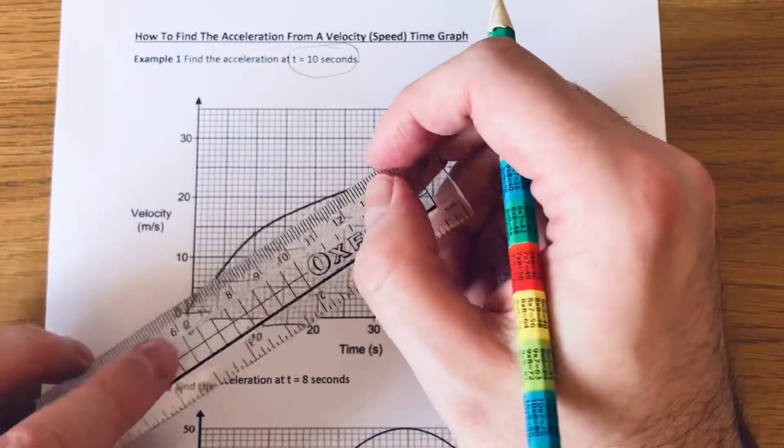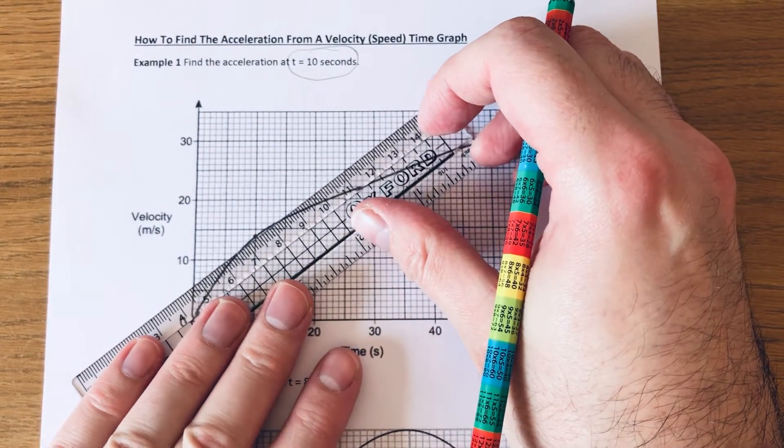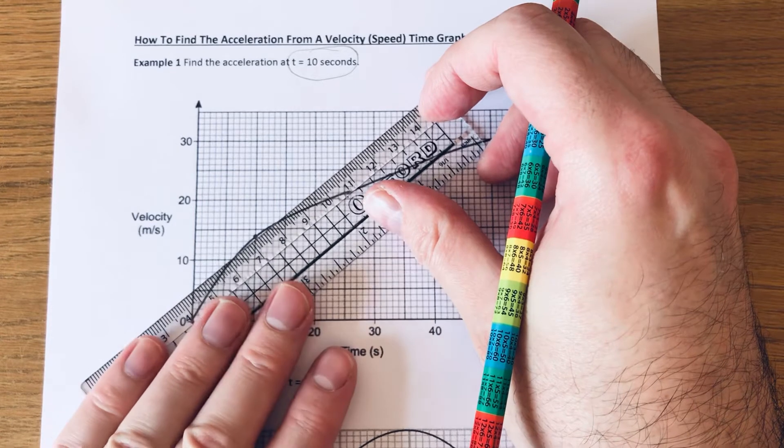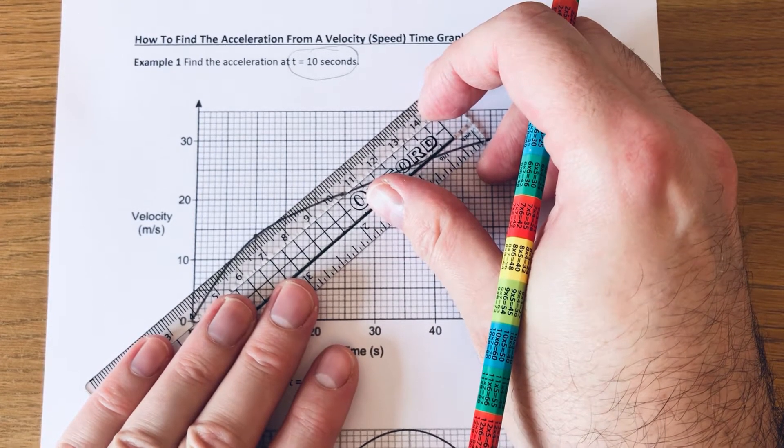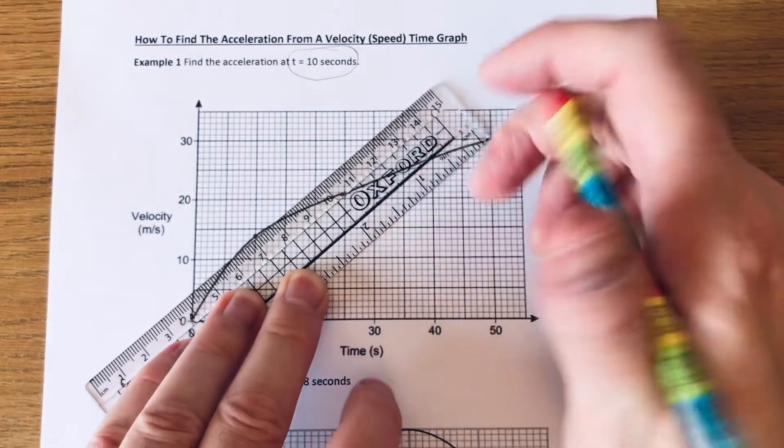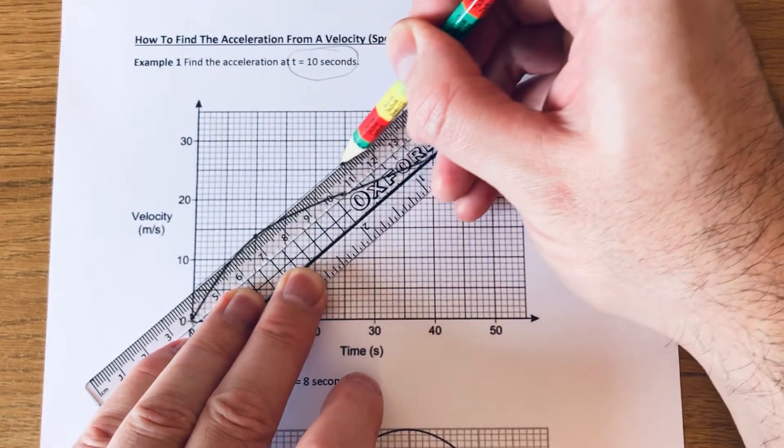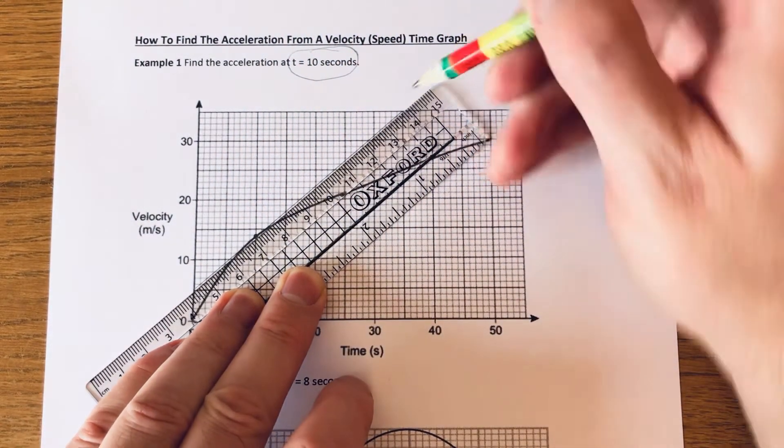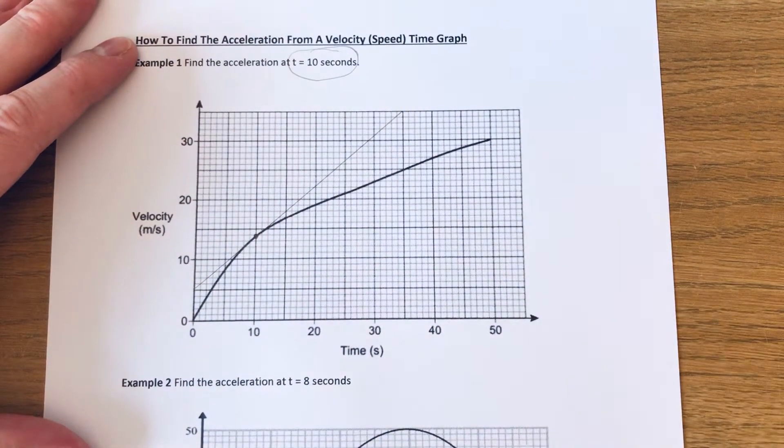So we need to do a tangent at this point here. You need to get your ruler. We need to do a straight line just touching the edge of the curve at that point. There will be a little bit of a margin of error on the mark scheme for this. So it's not going to be spot on. Okay, so there is our tangent.